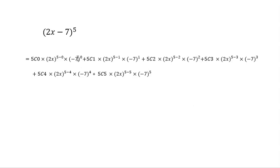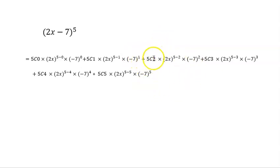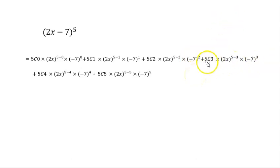It's very important that you keep the sign — you must write minus 7, not just 7. For term 2: 5C1 times (2x)^4 times (−7)^1. For term 3: 5C2 times (2x)^3 times (−7)^2. Remember r is always the term number minus 1, otherwise you'll end up with too few terms. Continue this pattern through all five terms.